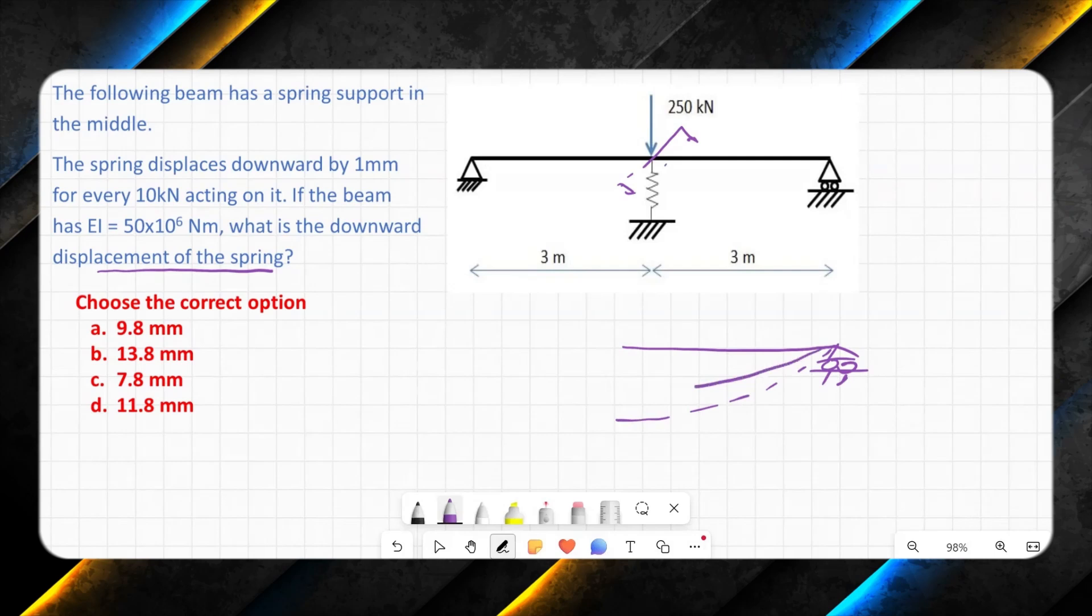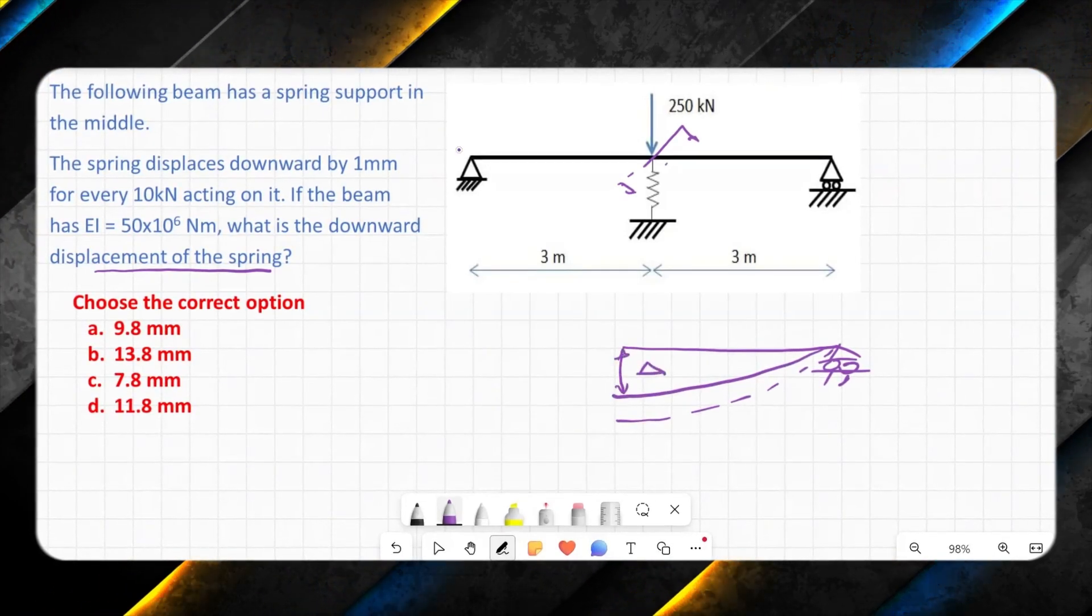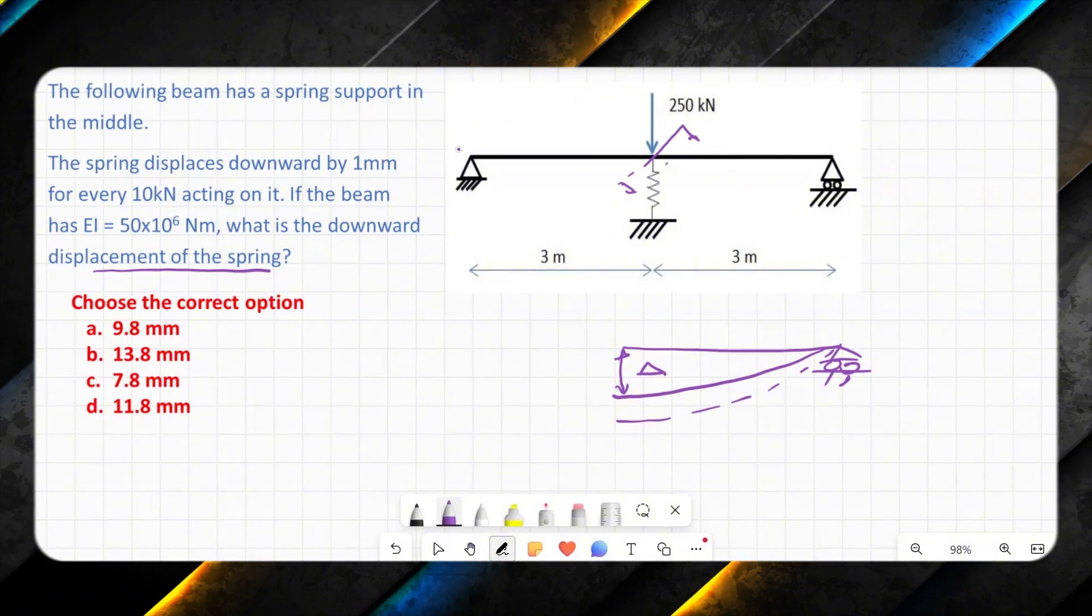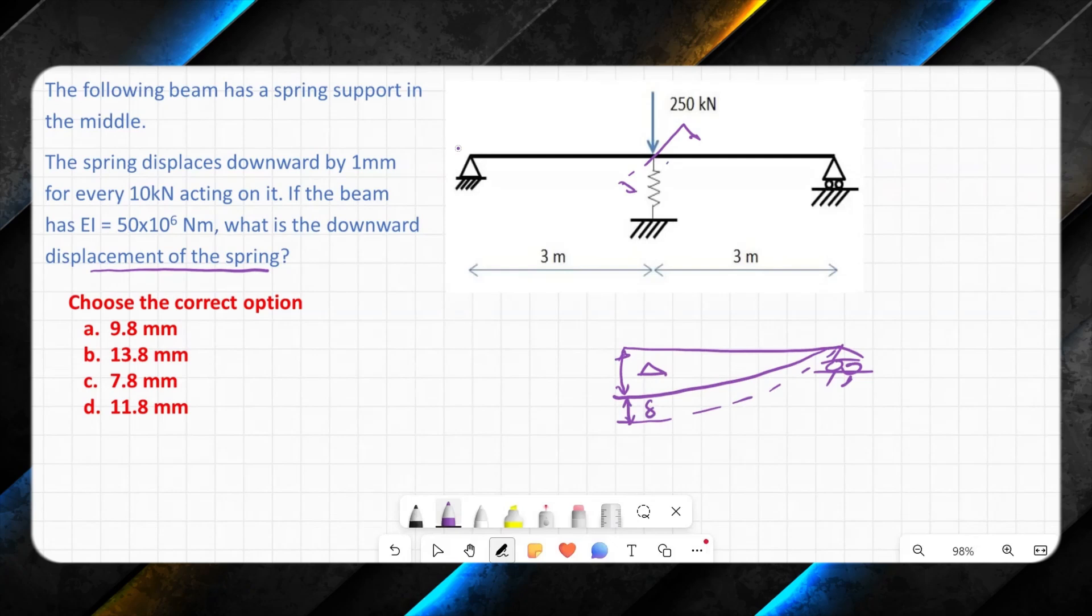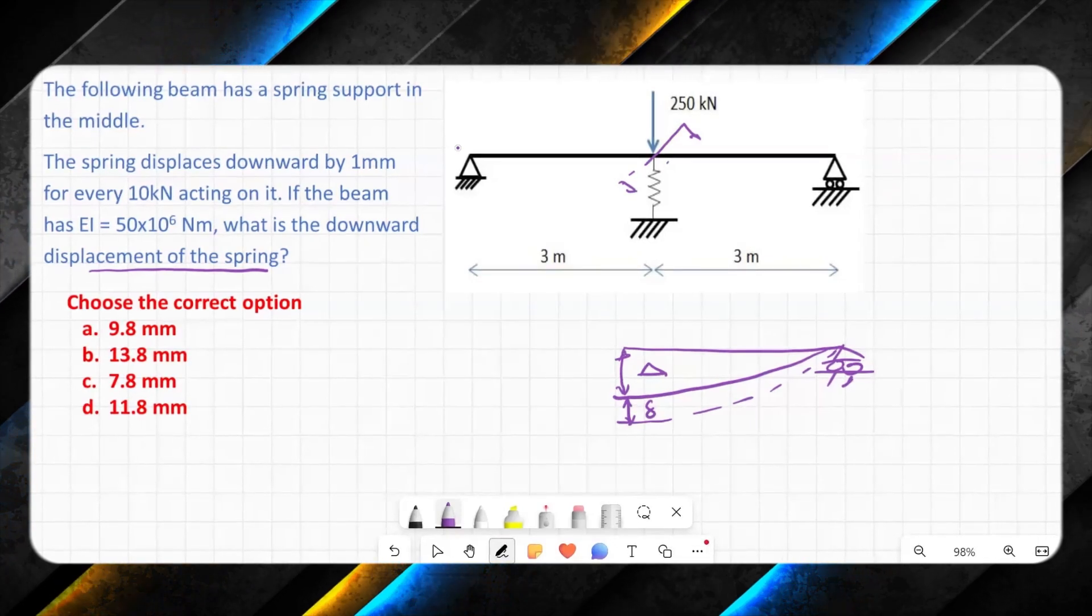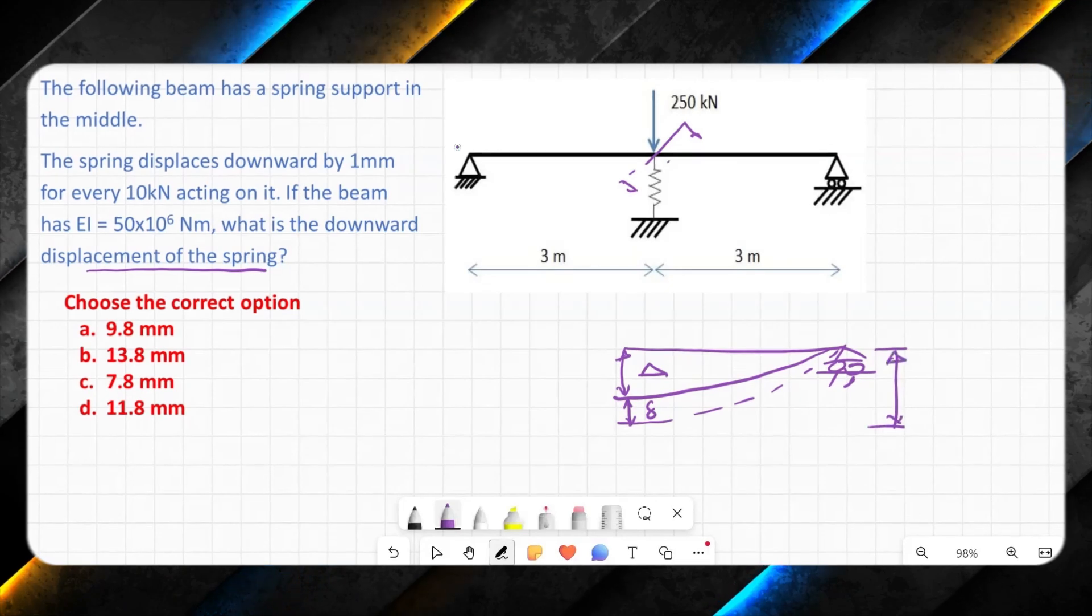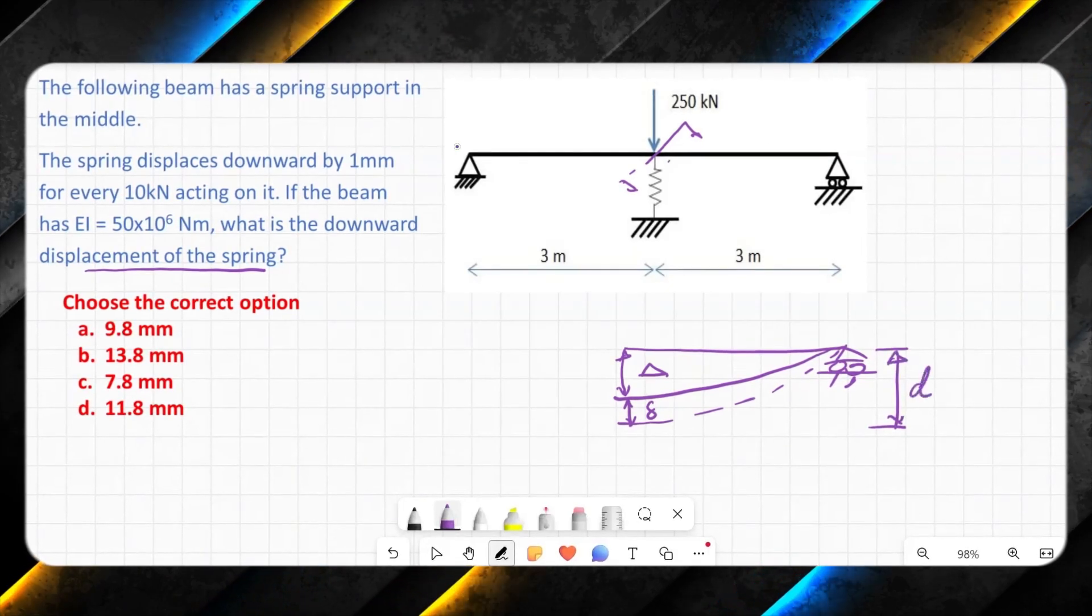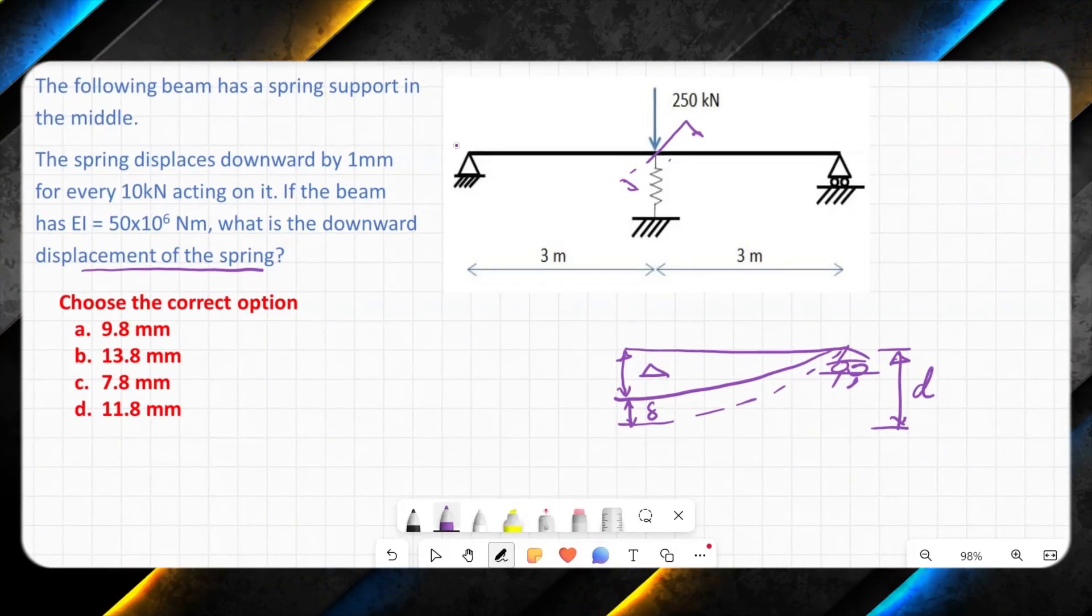This capital delta is something that we would like, and this is the small delta. So small delta is deflection of spring on its own, and D is the combined displacement, and this is the deflection of beam on its own. So first we need to find out deflection of beam without spring support.